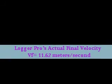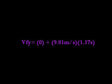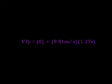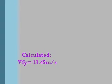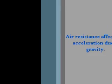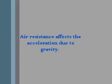The final velocity recorded by LoggerPro was 11.62 meters per second. When we used the equation — final velocity equals initial velocity plus acceleration due to gravity times time — we got a final velocity of 13.45 meters per second. This discrepancy between velocities was caused by the presence of air resistance.